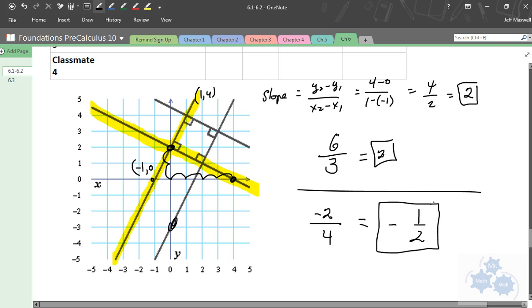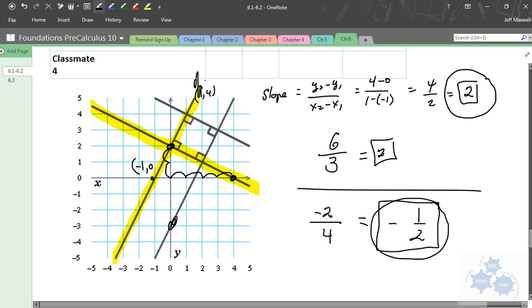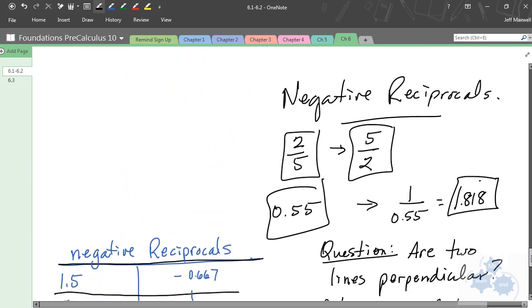So we came up with the rule yesterday that parallel lines have equal slopes. And perpendicular lines, if we take a look at this first line here, so this one here, and one of these other ones that form a 90 degree angle like this, those are perpendicular. This is negative 1 half. Everyone agree with that? So what we came up with yesterday is that perpendicular lines, their slopes are related in that one is the negative reciprocal of the other one.